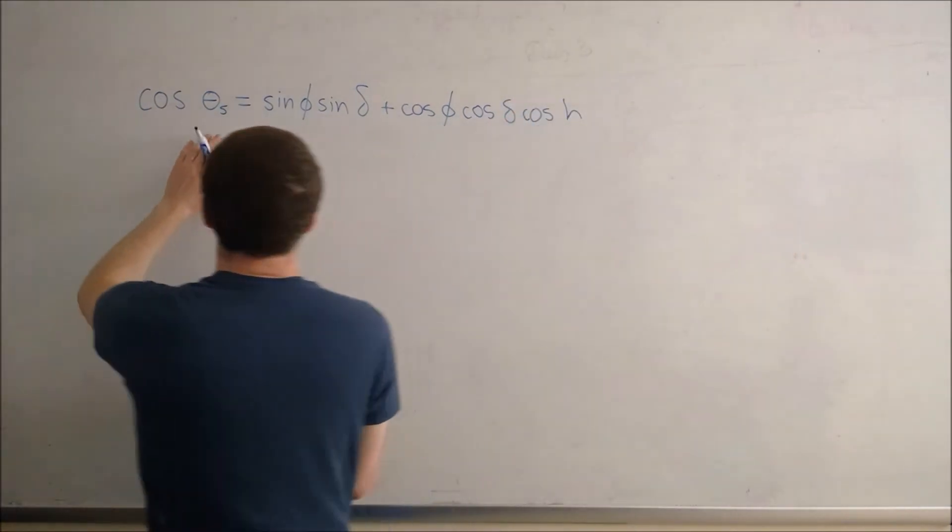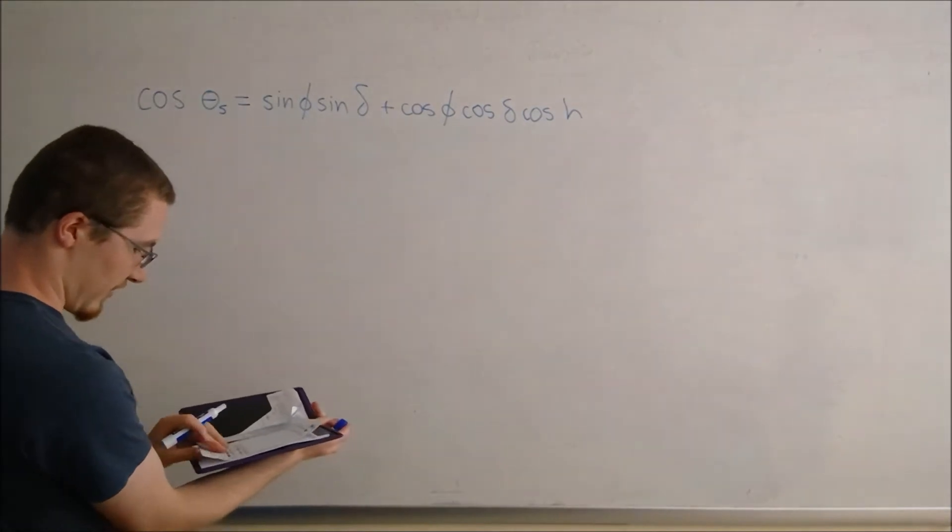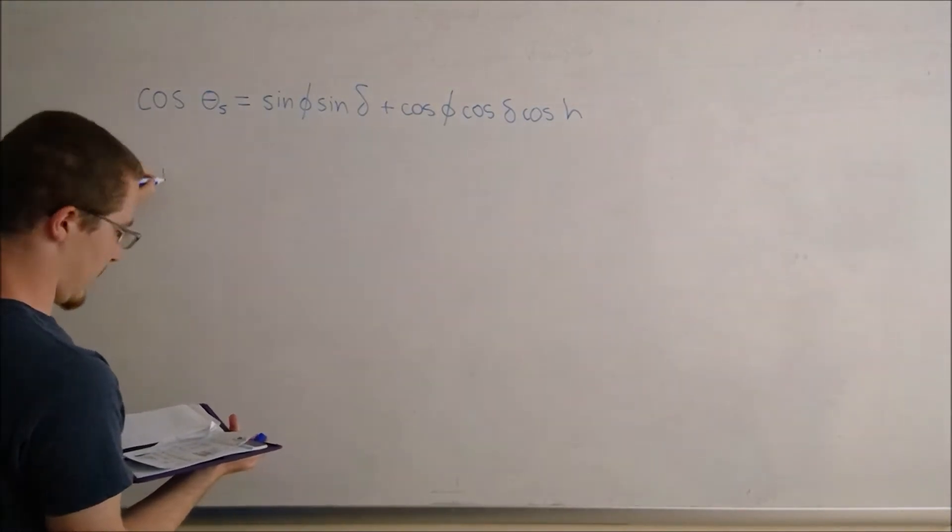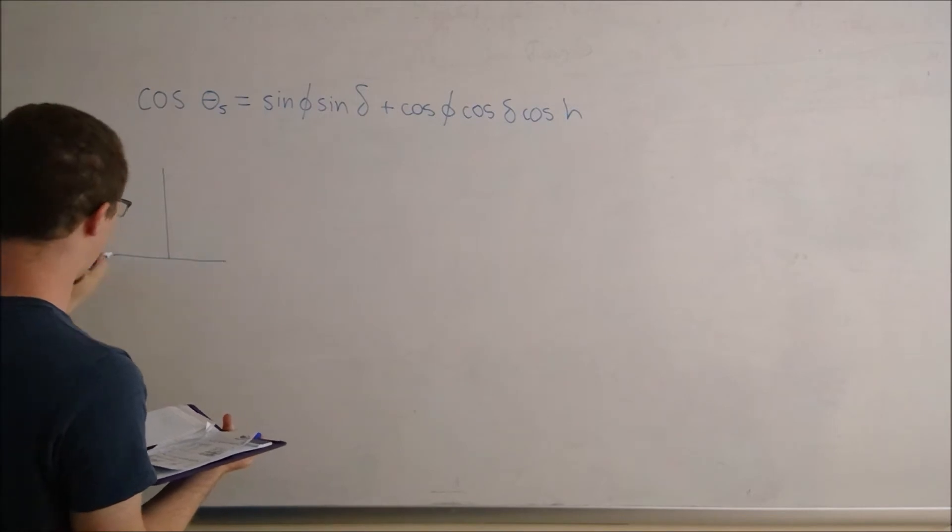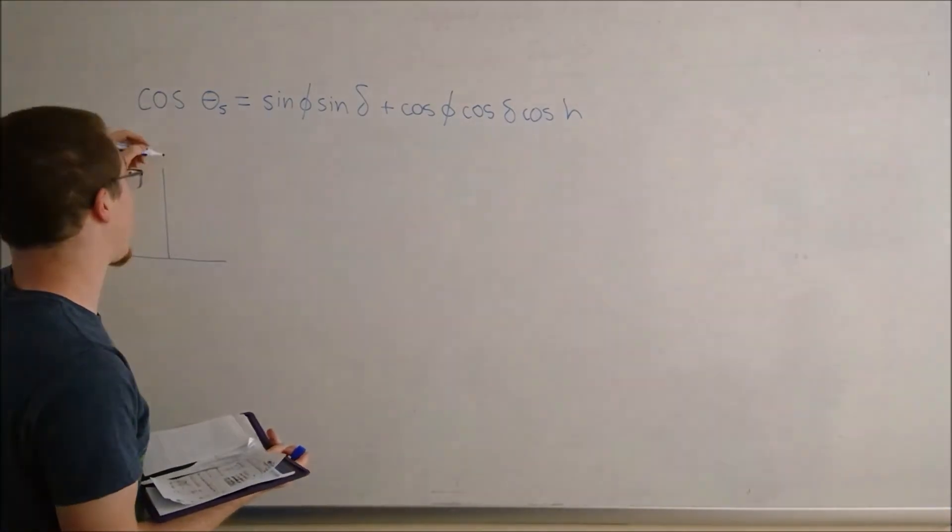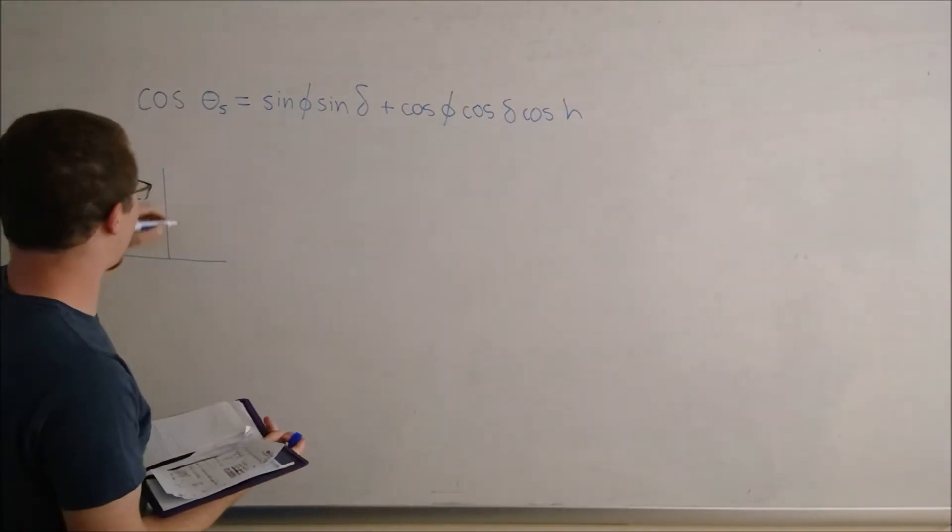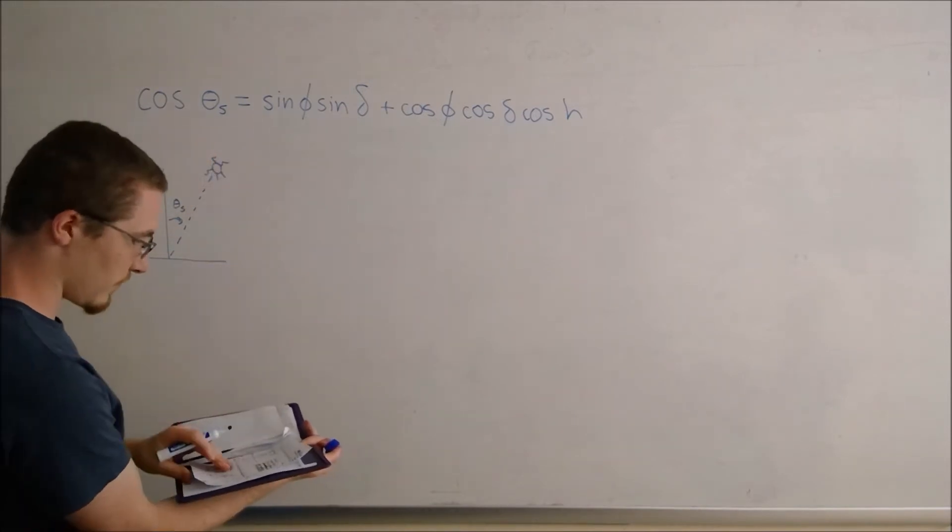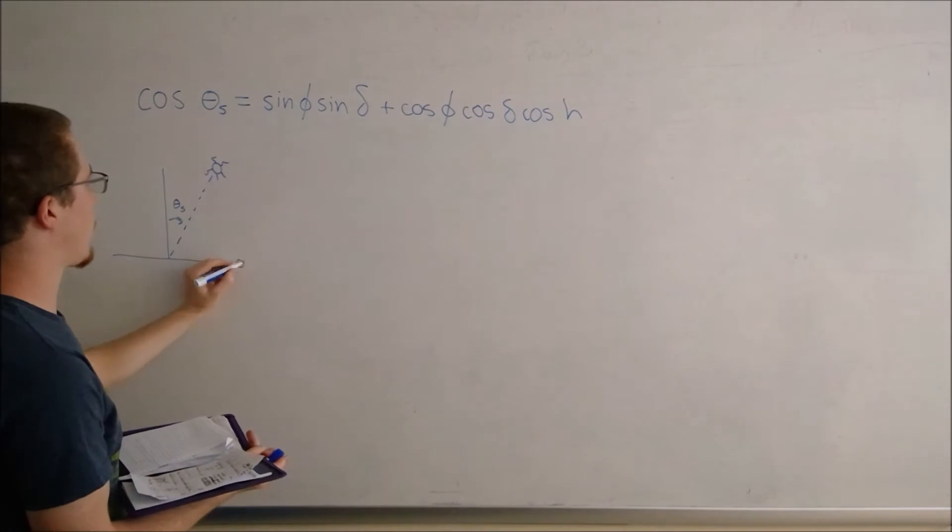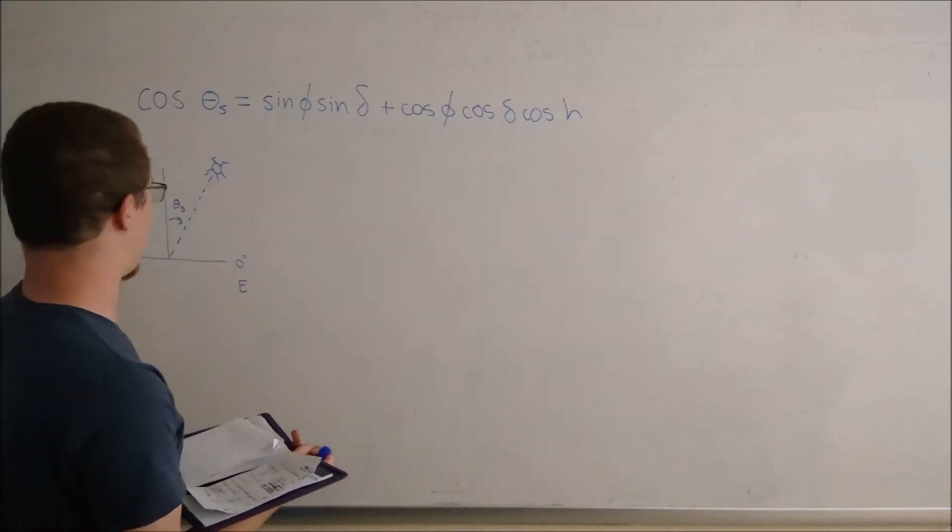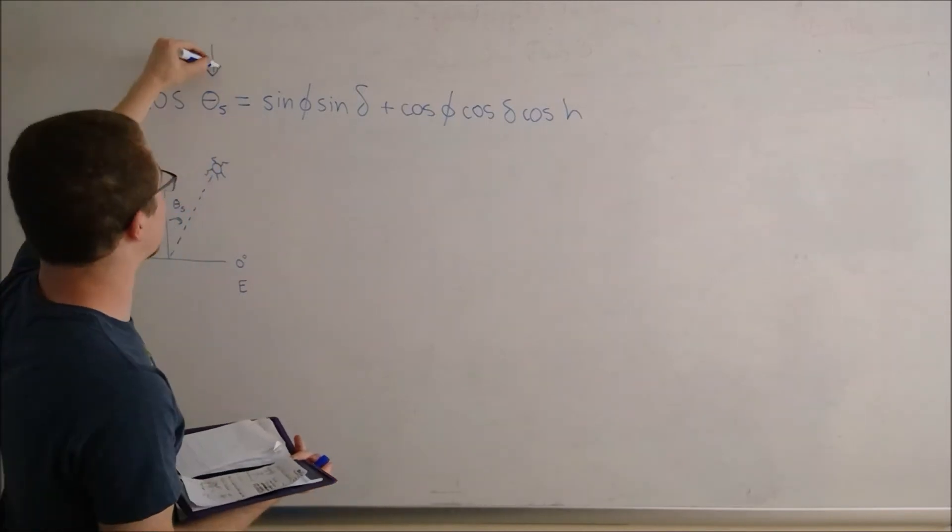Okay, each of these terms - theta sub s, the solar zenith angle, defines the property by which the Sun is away from solar noon or directly overhead. Okay, here I just continue to explain the solar zenith angle, that it is wherever the Sun is away from solar noon, that is the angle you're at. Here I just explained that the sunrise and sunset are at 0 and 180 degrees.